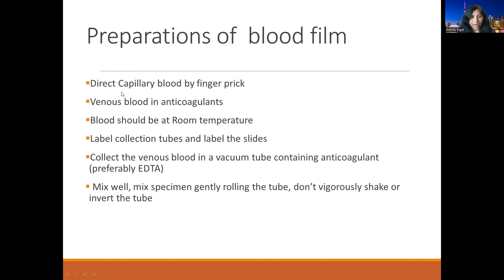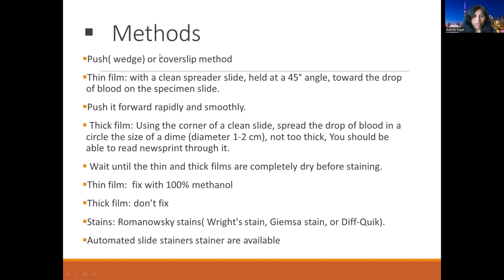There are different methods of preparation of the blood film. They can be made either directly or indirectly. Direct is capillary blood by fingerprick. Most commonly used is venous blood, and the most commonly used anticoagulant is EDTA. When making slides, blood should be at room temperature, and when mixing the tube, it should be mixed gently by rolling. Do not vigorously shake or invert the tube — that will distort the cells and distort the morphology.